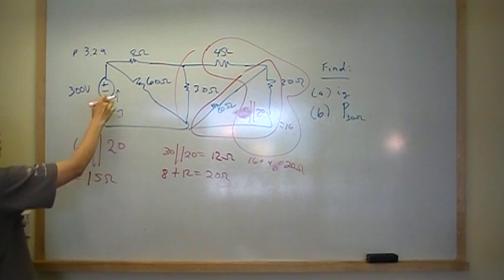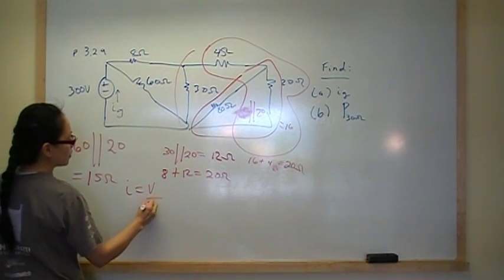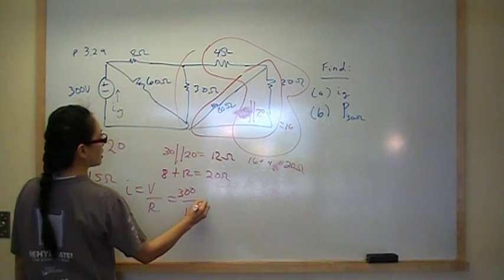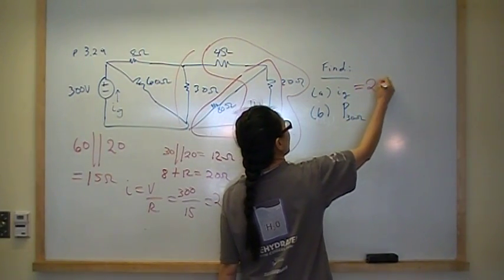And we needed that because we're going to use Ohm's Law to find I sub G. So V is equal to IR, so I is equal to V over R, which is 300 over 15, which is 20 amps. So the answer to part A is 20 amps.